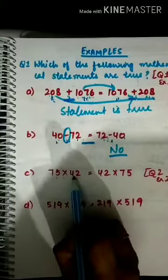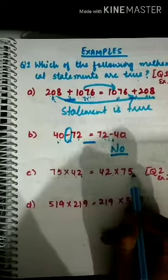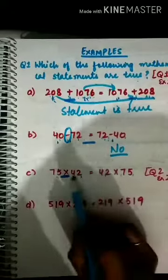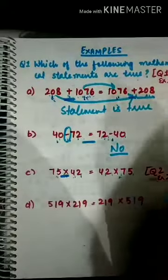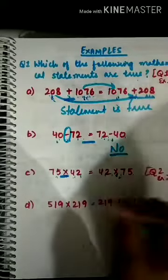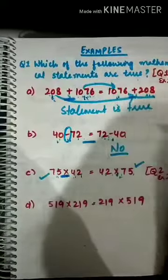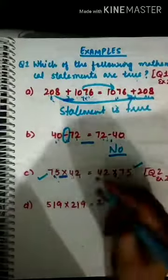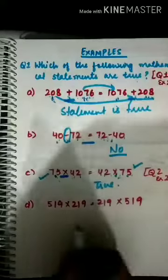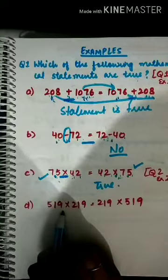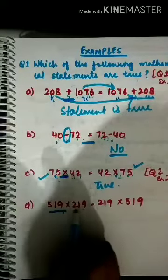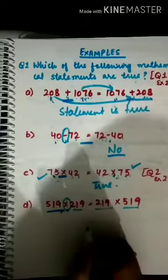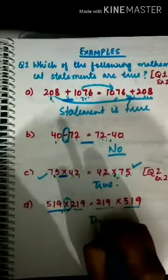Next is 75 multiplied by 42 compared with 42 multiplied by 75. The operation is multiplication and they have changed the order of the numbers. We have already studied that multiplication is commutative — the answer is not affected by changing the order. So this statement is true. The following example is also multiplication with changed order, and since multiplication is commutative, that statement is also true.